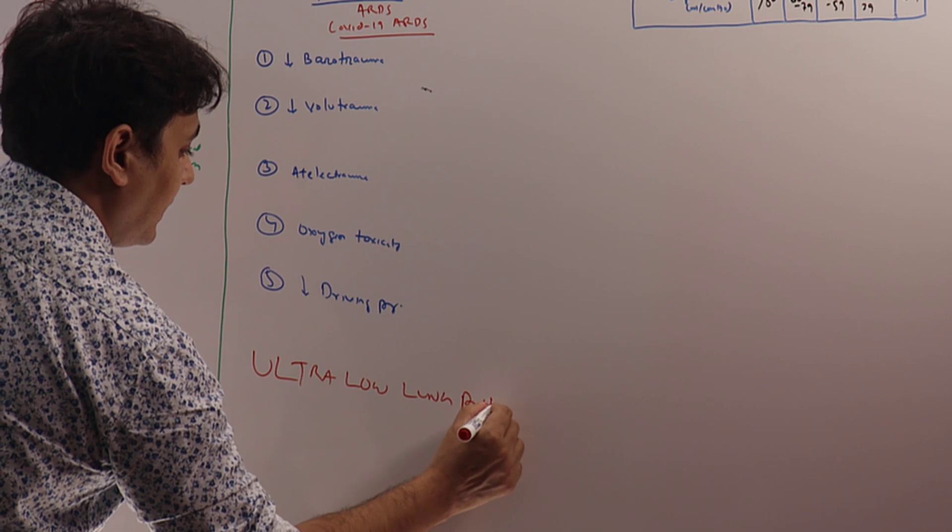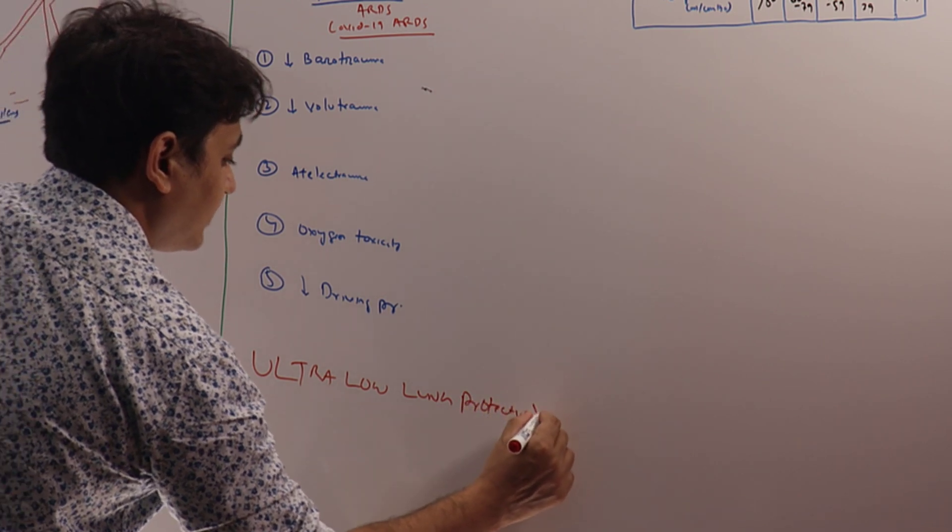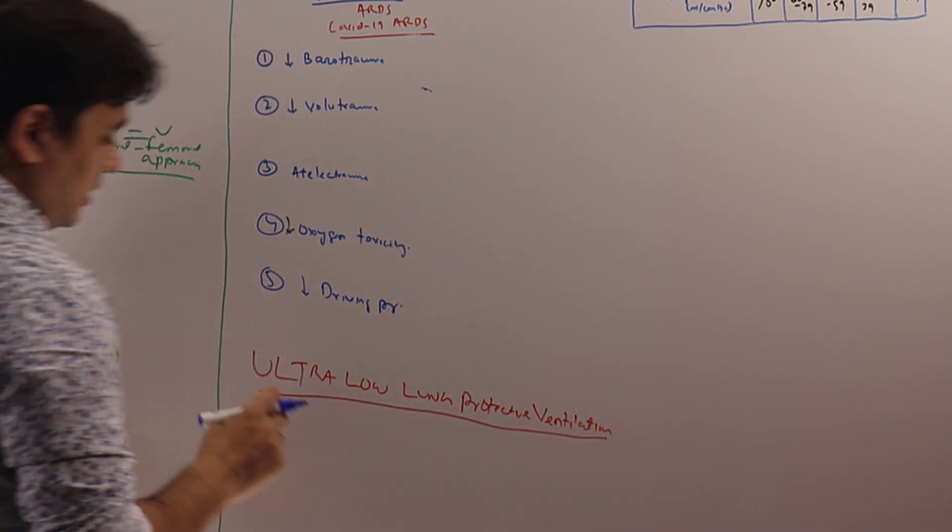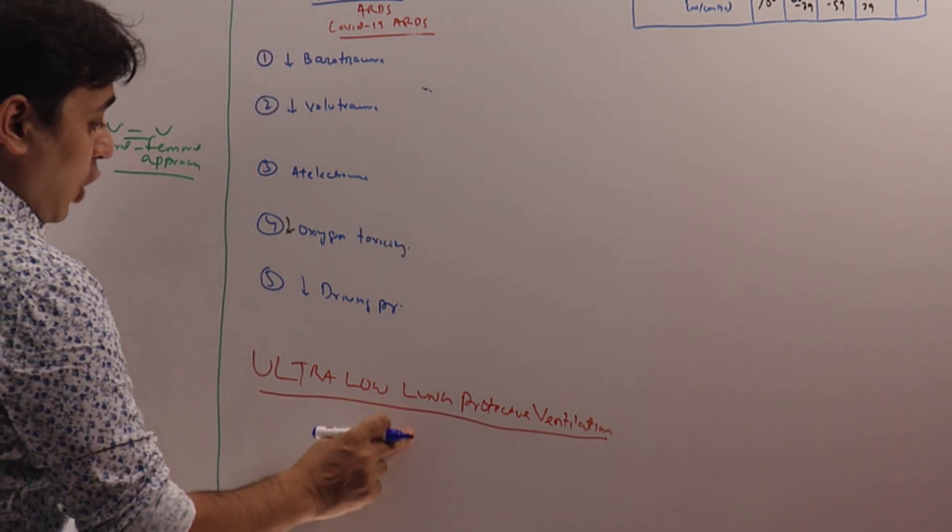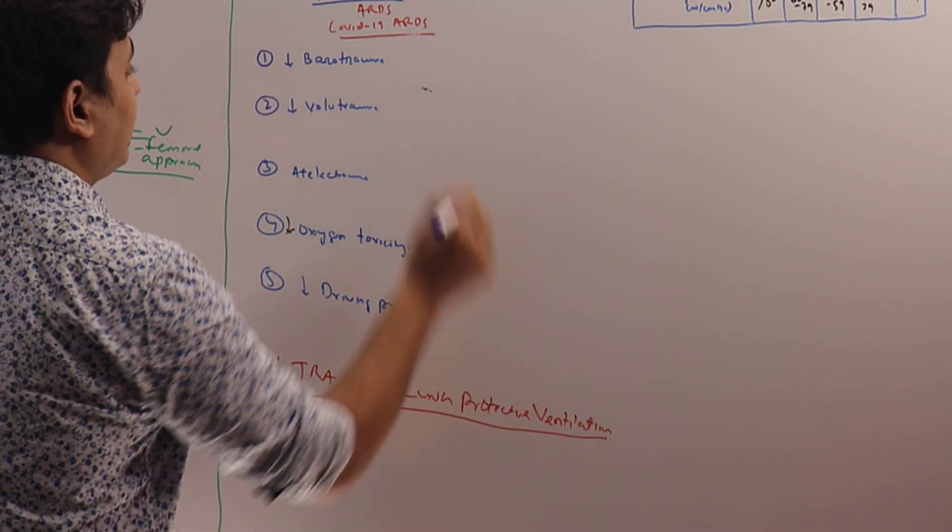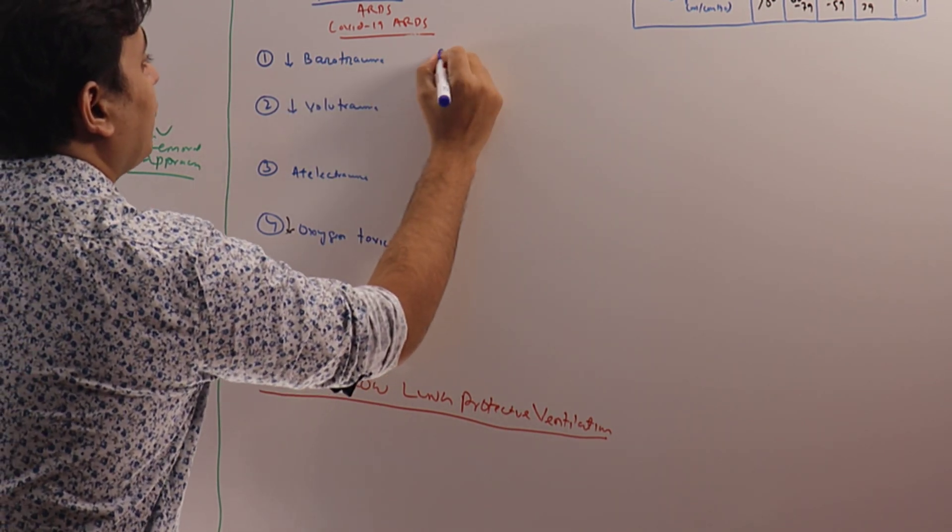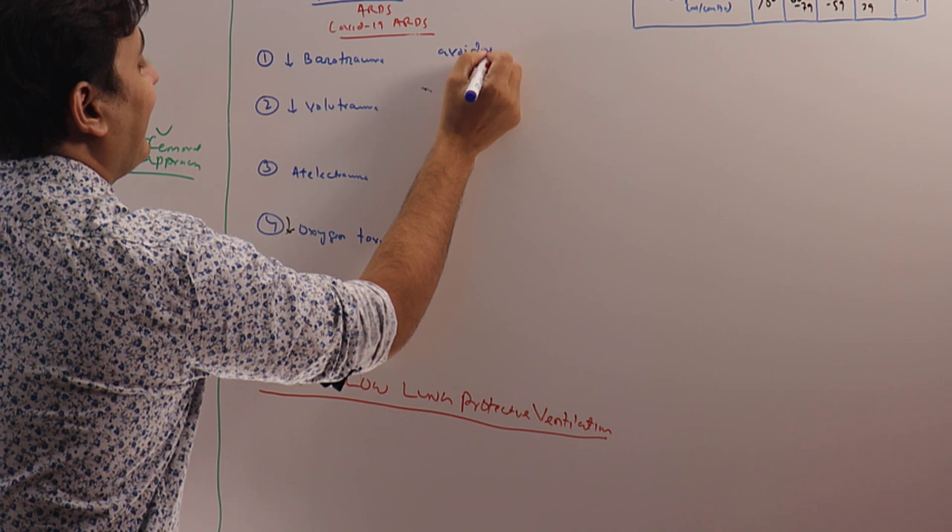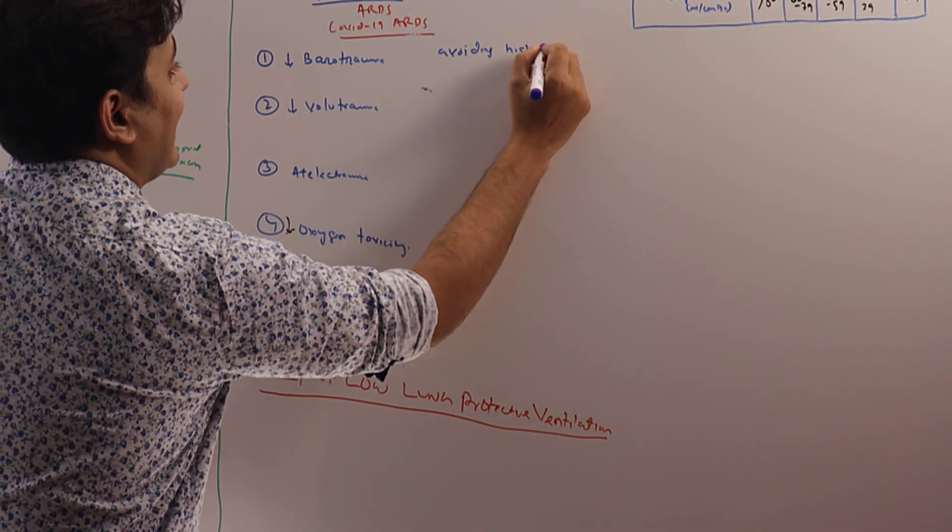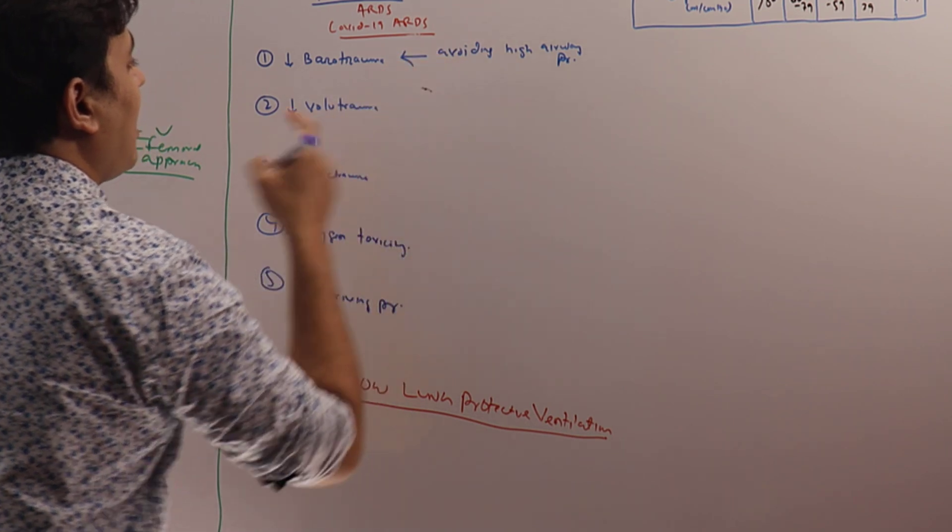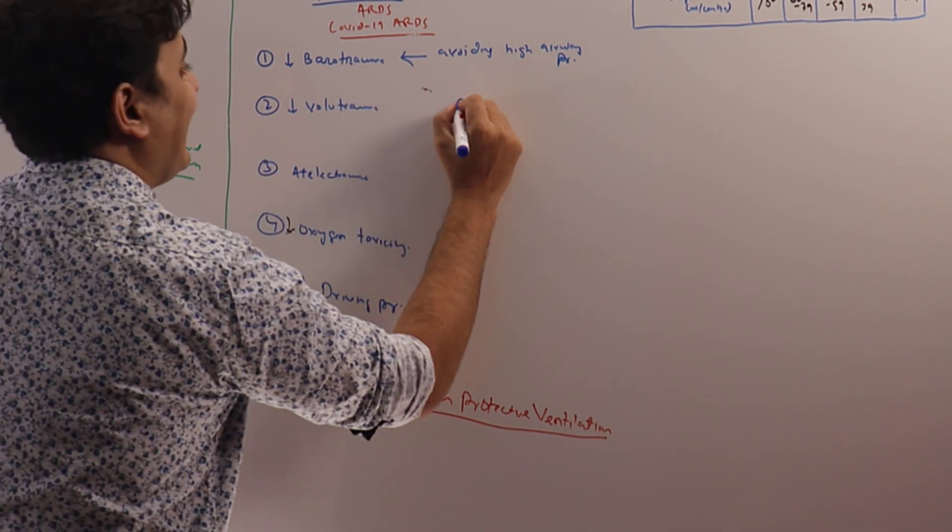Because you are using ultra-low lung protective ventilation, how do we decrease the barotrauma? By avoiding high airway pressures. How do we avoid volutrauma? By avoiding a large tidal volume.